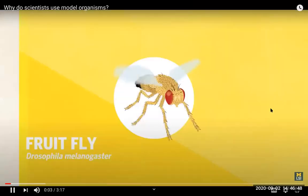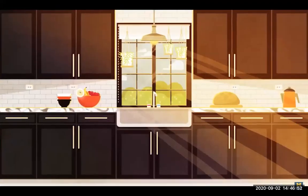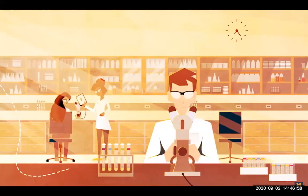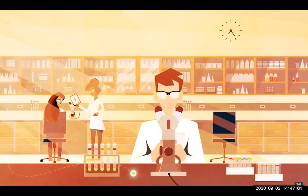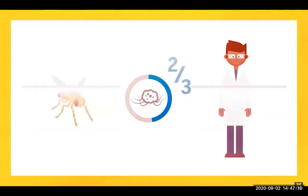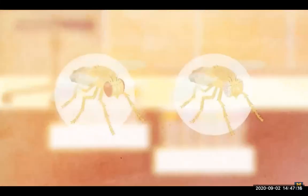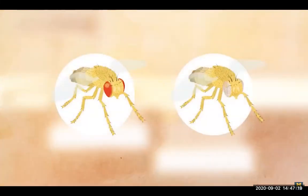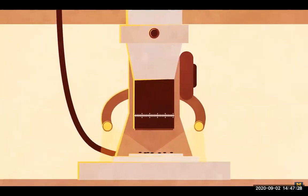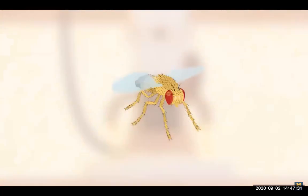Meet the fruit fly, Drosophila melanogaster. This common kitchen pest is actually a powerful research tool for studying human health and disease. About 60% of the genes in fruit flies are also found in humans, and two thirds of genes involved in human cancers have counterparts in fruit flies. These similarities allow researchers to use fruit flies for experiments that would be impossible, unethical, or cost prohibitive in people or other complex organisms.